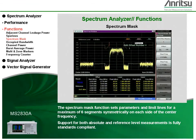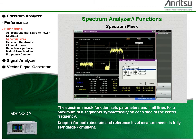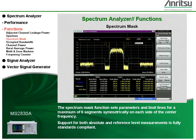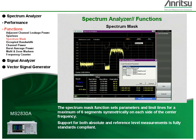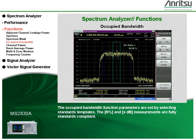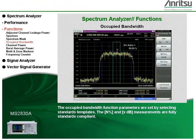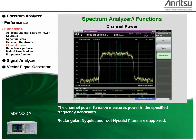The spectrum mask function sets parameters and limit lines for a maximum of 6 segments symmetrically on each side of the center frequency. Support for both absolute and reference level measurements is fully standards compliant. The occupied bandwidth function parameters are set by selecting standards templates, and the n% and xdB measurements are fully standards compliant. The channel power function measures power in the specified frequency bandwidth.